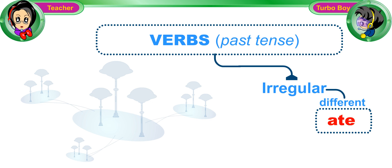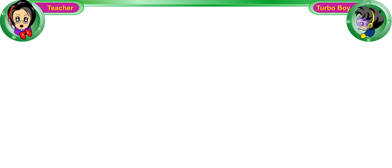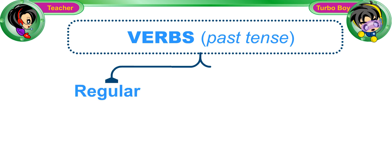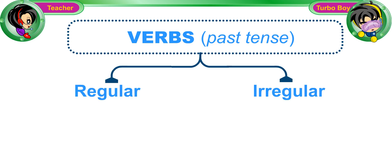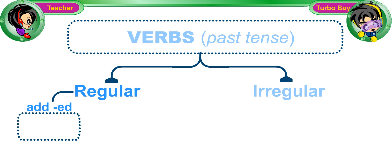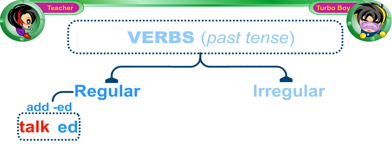Yes. Now, Turbo Boy, tell me what you have learned today. Okay. We learned that there are regular verbs and irregular verbs. For regular verbs, we add ed behind the verbs to make the simple past forms. For example, we write ed behind the verb talk to form the simple past form talked.